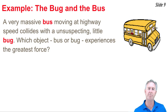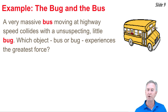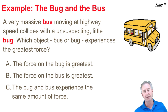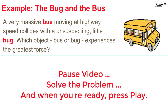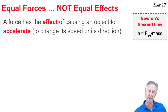Here's a classic question known as the bug-and-bus question. A very massive bus is moving at highway speeds and collides with an unsuspecting little bug. Upon which object — the bus or the bug — is the force the greatest? The options are: the force is bigger on the bug, the force is bigger on the bus, or the bug and the bus experience the same amount of force. The answer is C. According to Newton's Third Law, the forces are of equal magnitude on both of the interacting objects. People have difficulty with this because they confuse the force with the effect of the force.